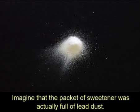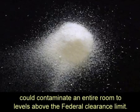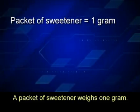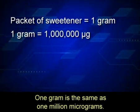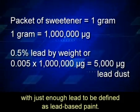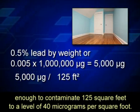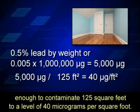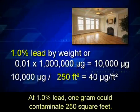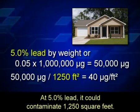Imagine that the packet of sweetener was actually full of lead dust. A one gram packet of crushed lead-based paint could contaminate an entire room to levels above the federal clearance limit. A packet of sweetener weighs one gram, and one gram is the same as one million micrograms. That one gram packet would contain 5,000 micrograms of lead dust — enough to contaminate 125 square feet to a level of 40 micrograms per square foot. If the dust had a higher lead content, it could contaminate an even larger area: at 1% lead, one gram could contaminate 250 square feet; at 5% lead, it could contaminate 1,250 square feet.